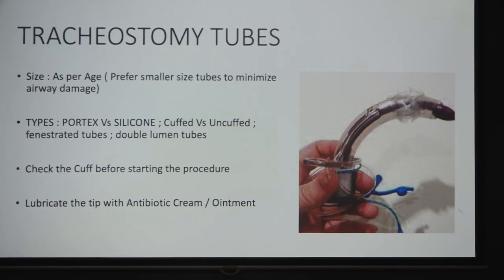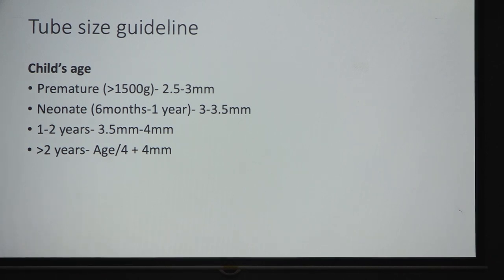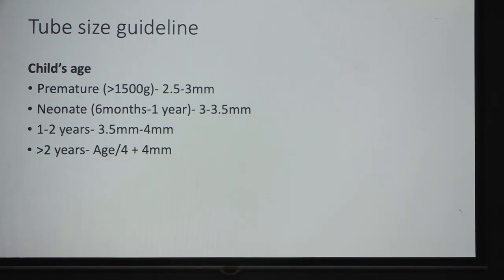Coming to the tubes — most often we use Portex tubes, and more and more we are seeing silicone tubes as well. We should know the indication and accordingly choose cuffed versus uncuffed, fenestrated, or double lumen tubes. Always check the cuff before starting and keep the tip lubricated with antibiotic cream or ointment. In adults, size 6.5–7 for females and 7–7.5 for males. In pediatrics, size depends on age — in premature infants around 1500 grams, 2.5–3 mm is appropriate. The Cincinnati group's mobile airway card is very useful for age-appropriate tracheostomy tube sizing.